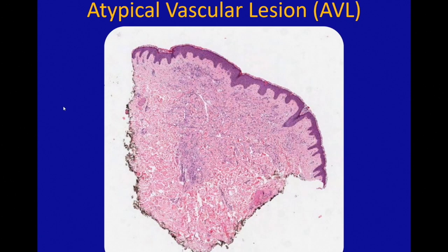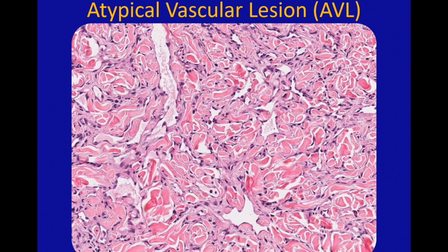Here's an example histologically. You can see a dermal proliferation of infiltrated vascular channels going quite deep in the dermis. At higher power, these are infiltrated channels dissecting between the collagen bundles. You can sometimes have a little bit of hyperchromasia in the endothelium, but they do not usually multilayer.